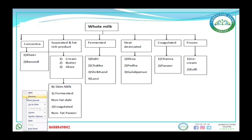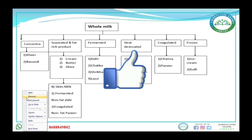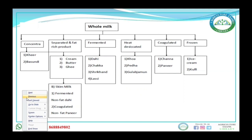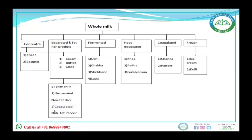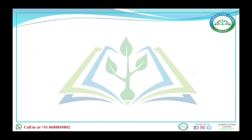From whole milk we can make: condensed or concentrated products like basundi; fat-rich products like cream, butter, and ghee; fermented products like dahi and lassi; heat desiccated products like khoa, gulab jamun; coagulated products like chenna and paneer; and frozen products like ice cream and kulfi. You just need to remember which product falls into which category.